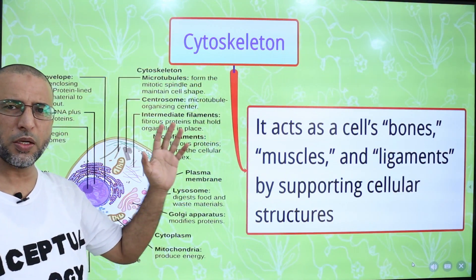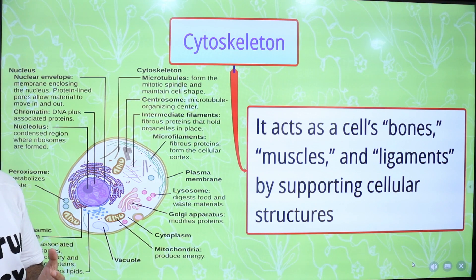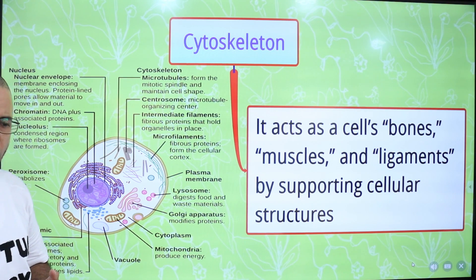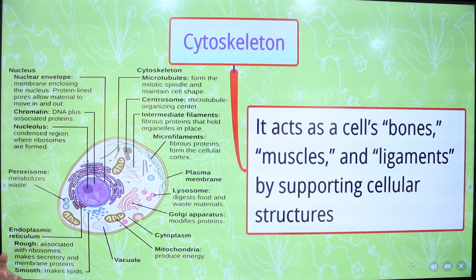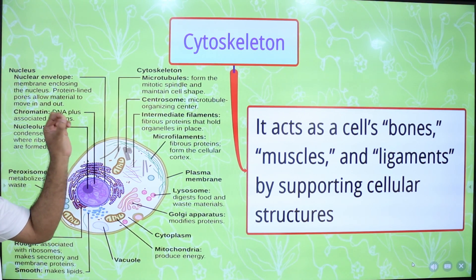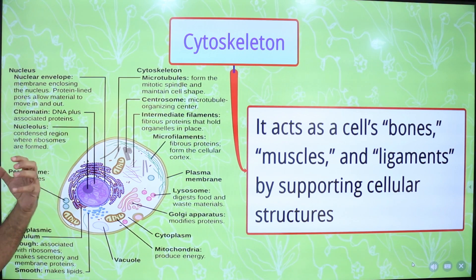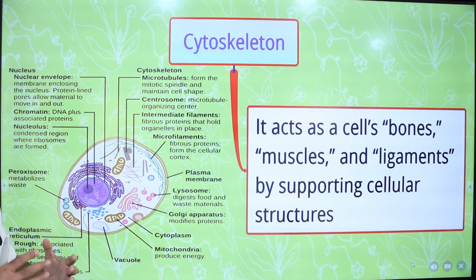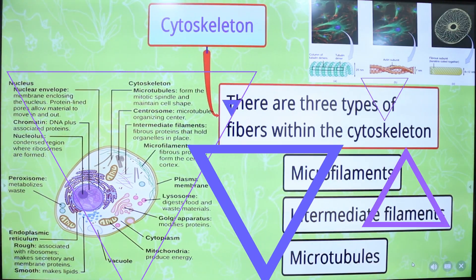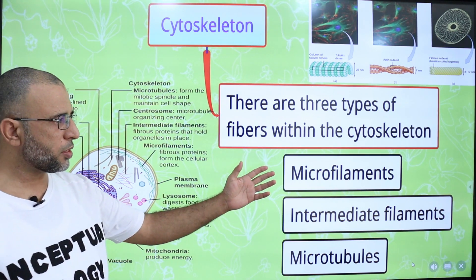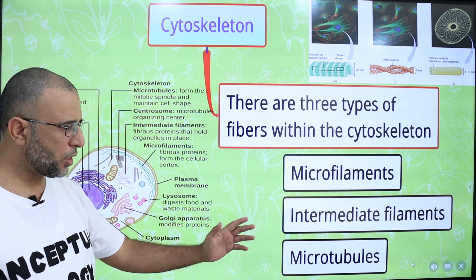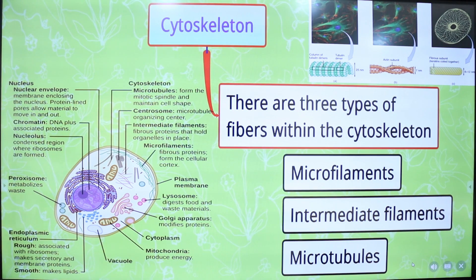In the cell, the cytoskeleton acts as the cell's bones, muscles, and ligaments by supporting cellular structures. As we know that bones, muscles, and ligaments are not present in a cell, but the cytoskeleton is a structure which is present in a cell that is acting like bones, muscles, and ligaments. There are three types of fibers within the cytoskeleton: microfilaments, intermediate filaments, and microtubules.